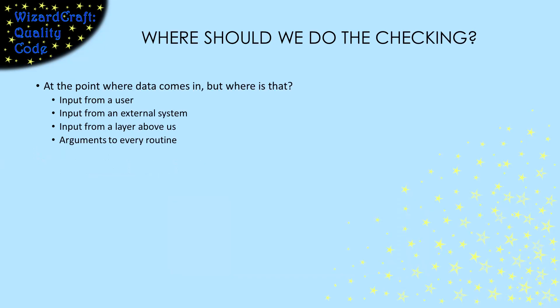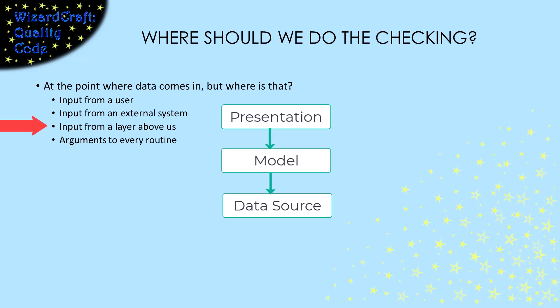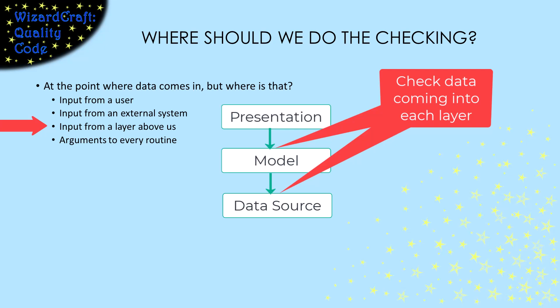We need a general strategy for where we're going to make the checks for invalid inputs. We certainly want to check data coming from a user — they are notorious for giving ridiculous input. If our system gets data from another system, we need to check that too. That could be a network computer that talks to us, or external sensors that feed us data. Then within one system, there might be borders between different parts where we should check things. For example, if we have a layered system, two layers might be built by different teams, so we might want to check the data coming from one layer to another.